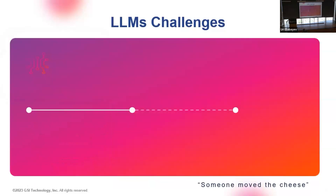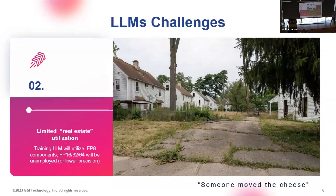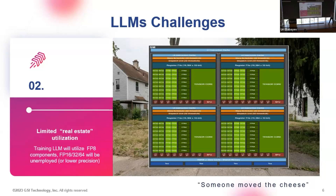The second challenge is what we call limited real-estate utilization. In the GPU architecture, you have separate small compute units for each number format — FP64, FP32, INT8, etc. If we are training an LLM and using FP8, the other compute units will be unemployed. This is a poor utilization of our hardware. As you can see in this GPU architecture diagram, when you run training or inference you are presumably using only one number format at a time.